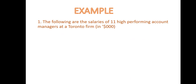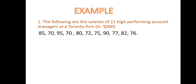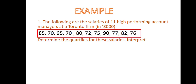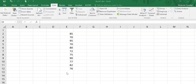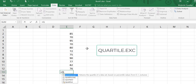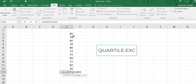For our example, the following are the salaries of 11 high-performing account managers at a Toronto firm in thousands of dollars. We want to determine Q1, Q2, and Q3 and interpret them. Once we have our data in Excel, we go to any cell and type equal to QUARTILE — I'll use QUARTILE.EXC — then highlight the whole column, put a comma, and